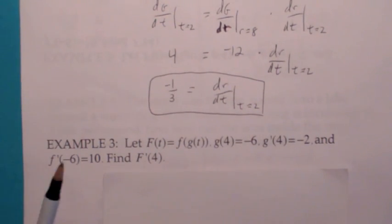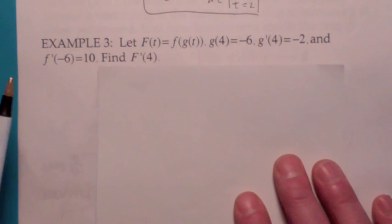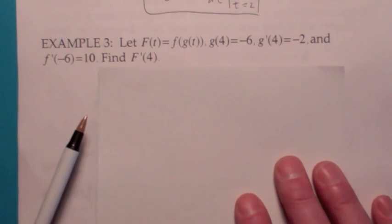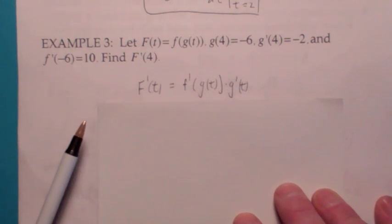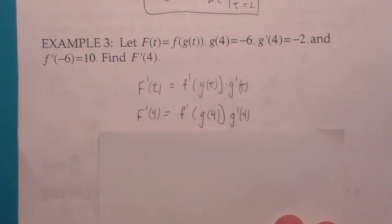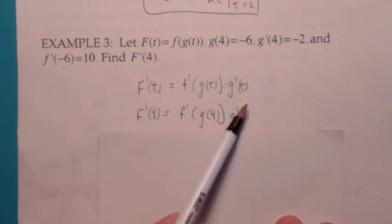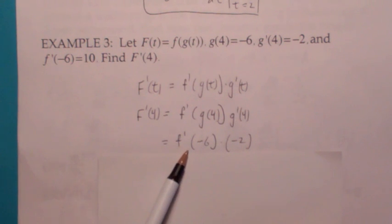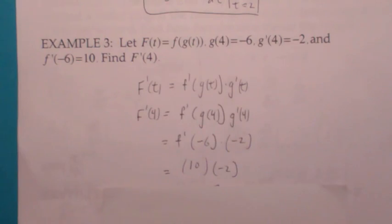This one is a little easier. It uses version 1 of the chain rule. Capital F of t is little f of g of t. If you differentiate using the chain rule, you get that F prime of t equals f prime of g of t times g prime of t. So you want to find F prime of 4 — just plug in 4 everywhere there's a t. Now, g prime of 4 is given to be negative 2, g of 4 is given to be negative 6, and f prime of negative 6 is equal to 10. So you've been given just enough information to finish the problem. Final answer is negative 20.